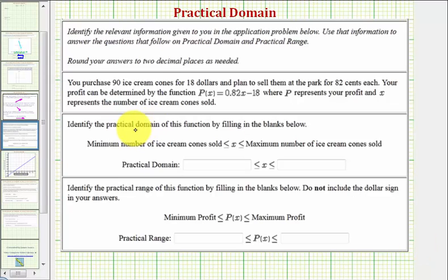In this question, we're asked to find the practical domain and practical range based upon the given situation, where you purchase 90 ice cream cones for $18 and plan to sell them at the park for 82 cents each. Your profit can be determined by the function P(x) = 0.82x - 18, where P represents your profit and x represents the number of ice cream cones sold.